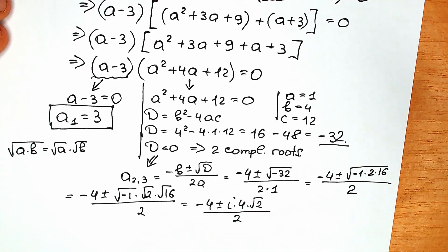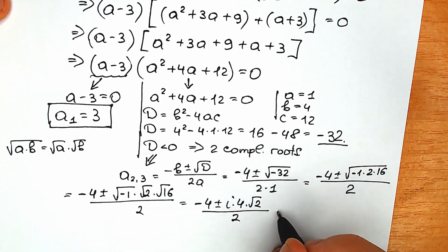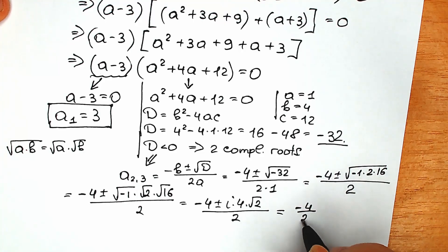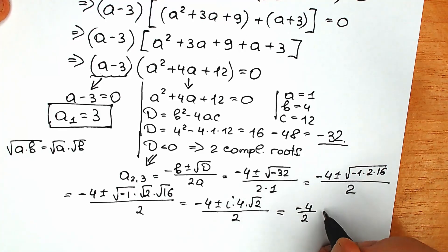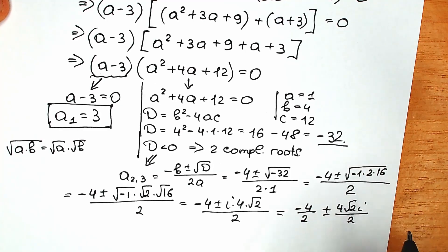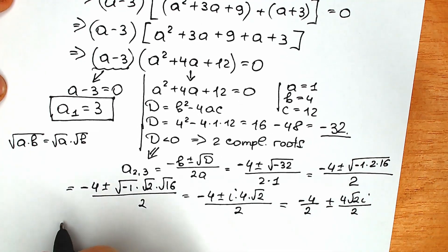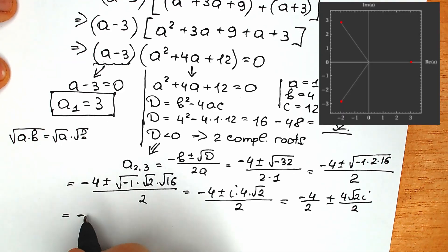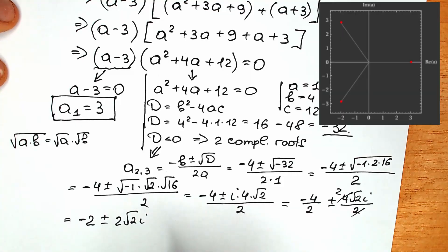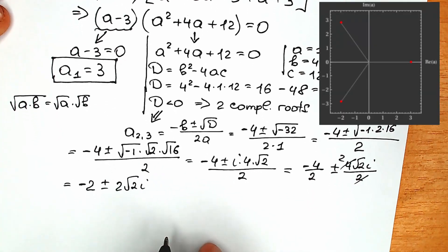Right now a tricky moment — a lot of students don't know this, but we can divide our numerator by 2: this part by 2 and this part by 2. So minus 4 divided by 2 equals minus 2, and 4 times square root of 2 times i divided by 2 equals 2 square root of 2 times i. So we have minus 2 plus or minus 2 square root of 2 times i. These are our two complex roots. Right now let's write the final answer.